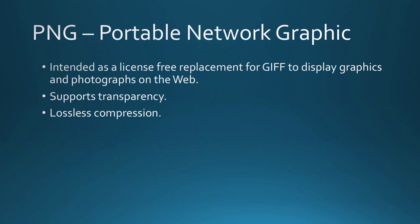Next we have PNG, or Portable Network Graphic, which is mainly used for the web and was designed for it. It was intended as a license-free replacement for GIF to display graphics and photographs on the web. GIF and JPEGs used to be used on the web a lot, but JPEGs aren't really good for graphics because of their compression schemes. GIF used a compression scheme that had a patent — at first the patent holder didn't say anything, but when they started charging licensing fees, developers created PNG as an open-source, free file format for the web.